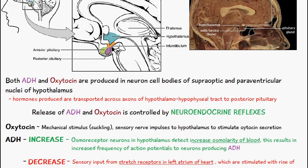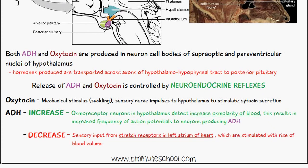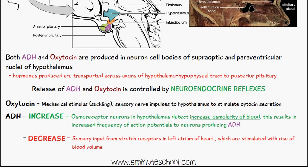In the case of oxytocin, we have the mechanical stimulus of suckling, and we have sensory nerve impulses sent to the hypothalamus to stimulate oxytocin secretion. In the case of ADH, the osmoreceptors in the neurons of the hypothalamus detect an increase in osmolarity of the blood.